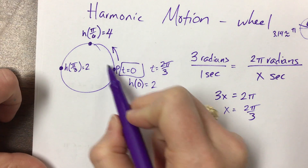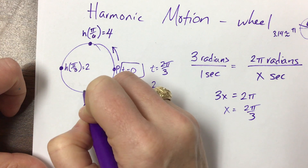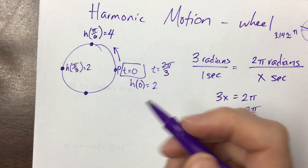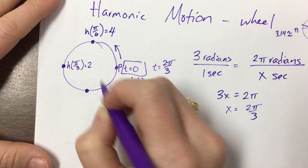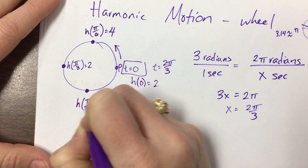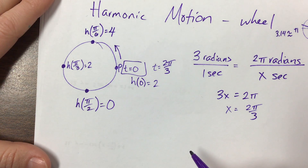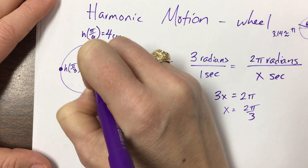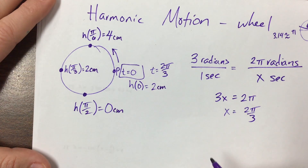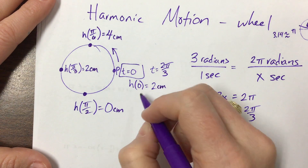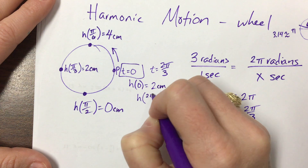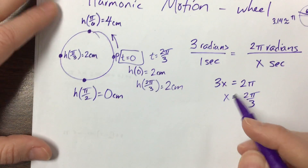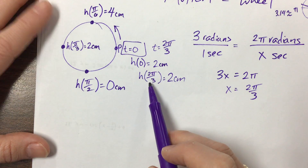So at time 0 we have our values: π/6, 2π/6 (which is π/3), and 3π/6 (which is π/2). Hopefully you already know your unit circle. 3π/6 becomes π/2 and that has a height of 0. And then we get back at time h(2π/3) with a height of 2 centimeters again. So 2π/3 is the period of our function.